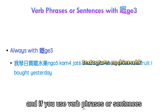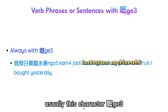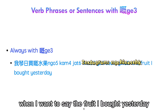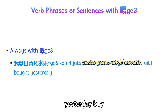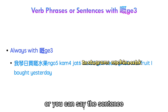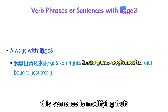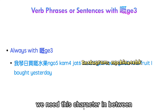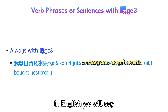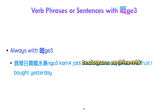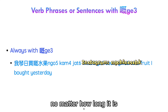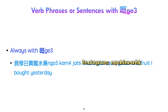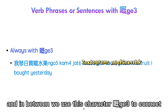If you use verb phrases or sentences to modify people and things, usually this character cannot be removed. For example, 'the fruit I bought yesterday' — 'I bought yesterday' is the verb phrase modifying 'fruit,' so we need ge to connect them. Note: in English we say 'the fruit that I bought yesterday,' but in Cantonese, modification always comes before the thing or people being described, no matter how long it is. So we say 'I bought yesterday' first, then 'fruit,' with ge connecting them in between.